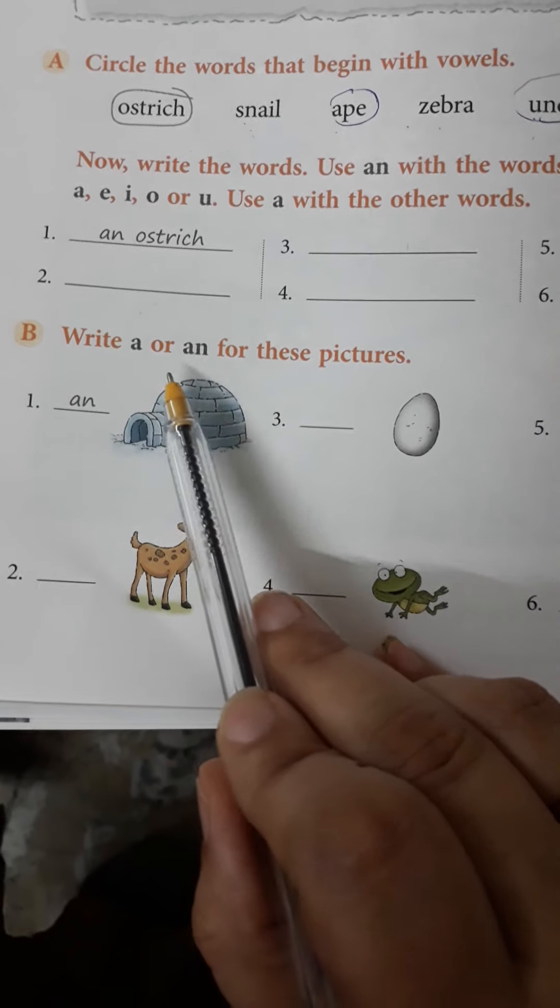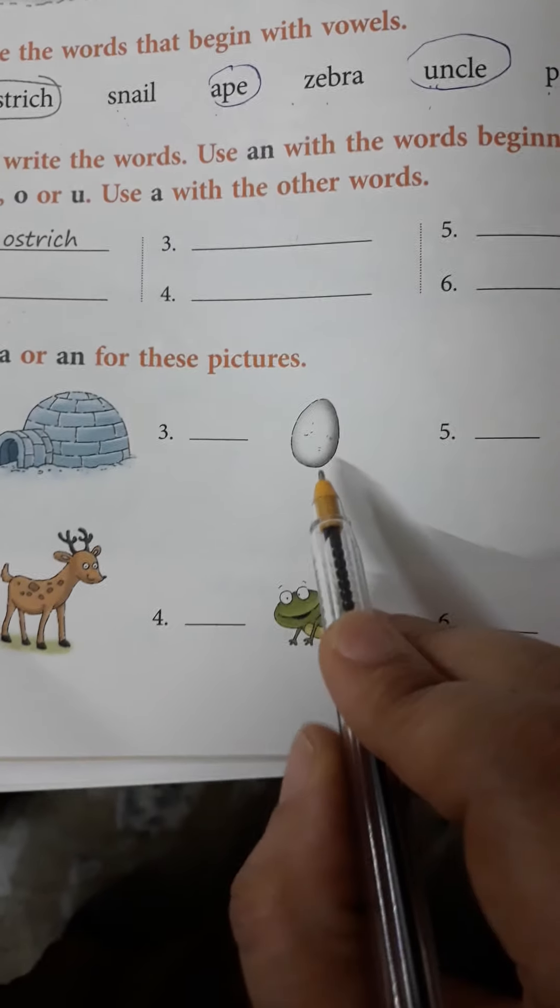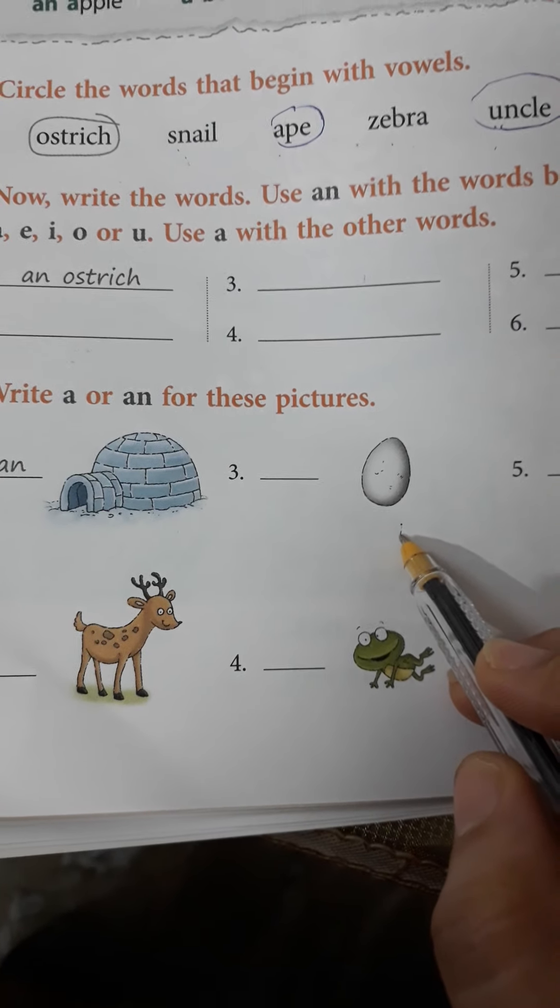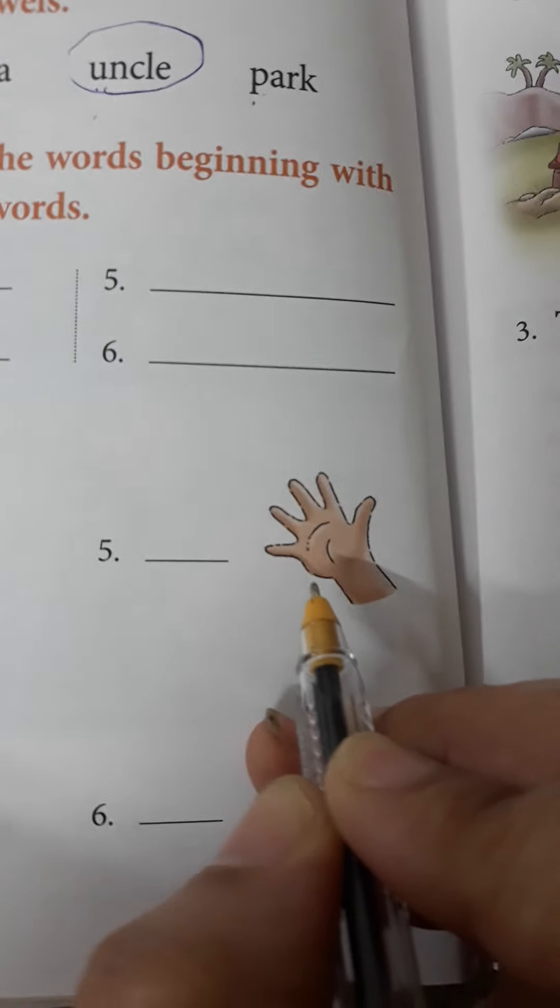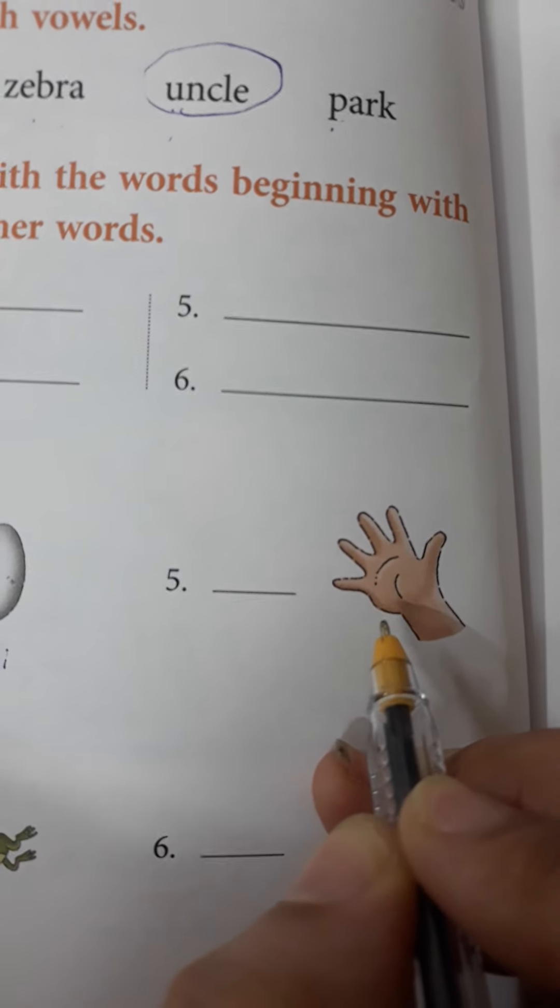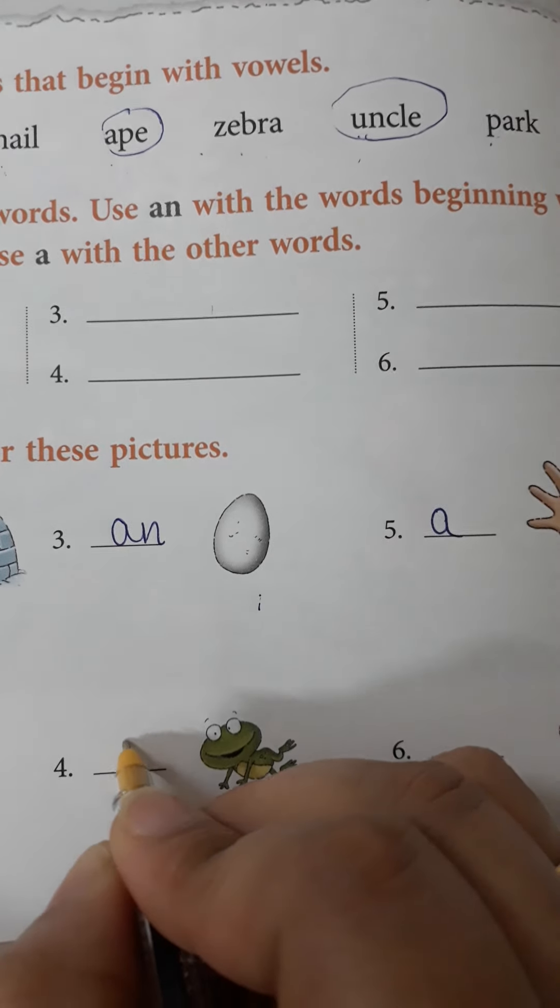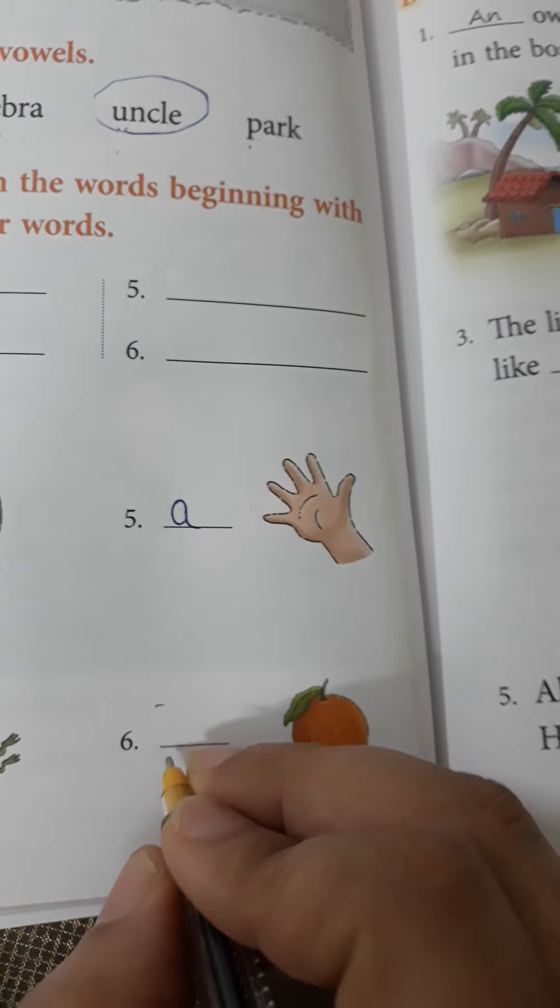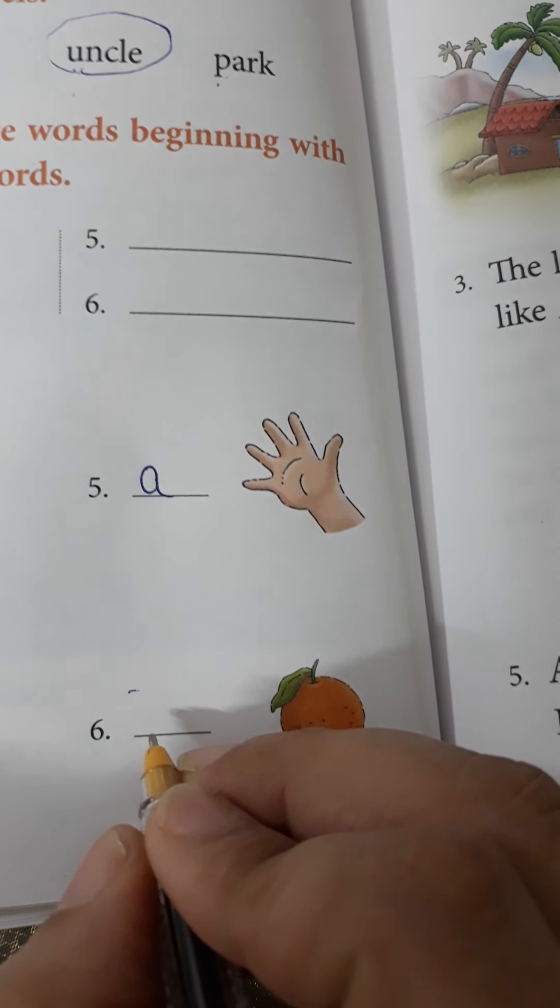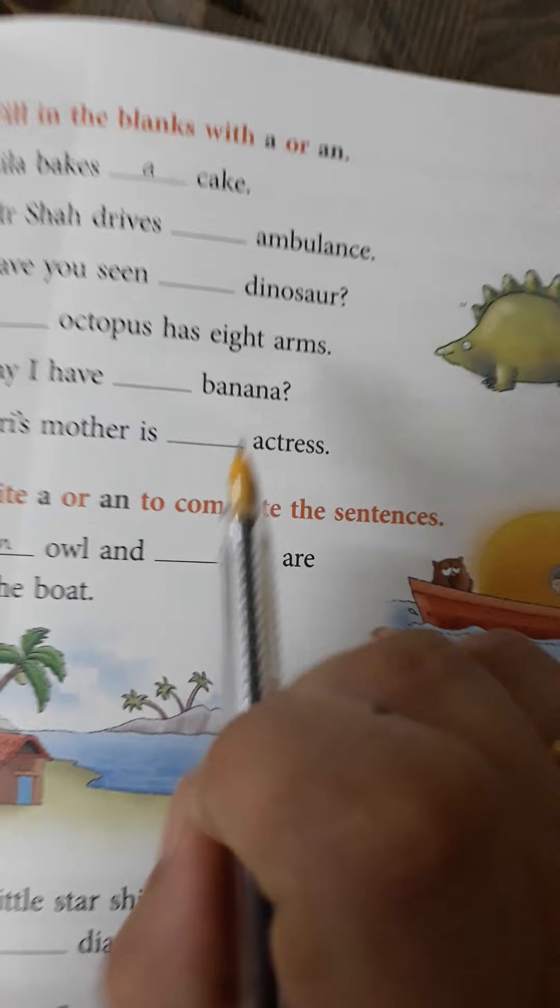Now, next B part, write A or AN for the pictures. This is igloo. Igloo starts with I. I is a vowel. So, AN. Egg. Egg starts with E. It is already giving the sound of E. And E is a vowel. So, what are we going to write here? AN. An egg. Hand. Hand starts with H. H is a consonant. So, here we are going to write A. A hand. Deer. A deer. Frog. Starts with F. F is a consonant. Apple. Apple. Apple starts with A. Now, A is a consonant. Am I right? A is a consonant? No. It's a vowel. So, here we are going to write AN. Alright. Have you got it?